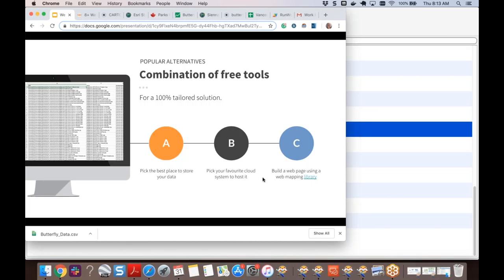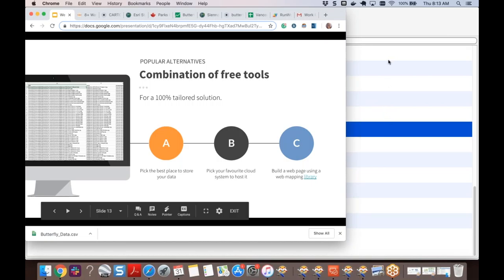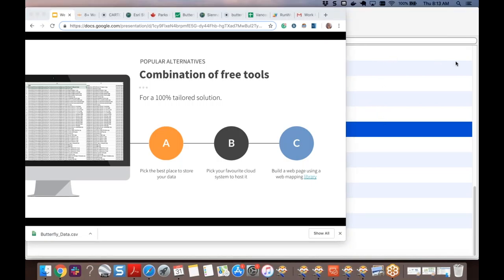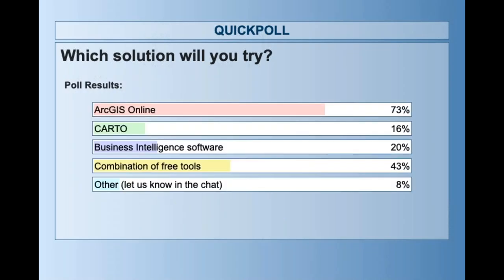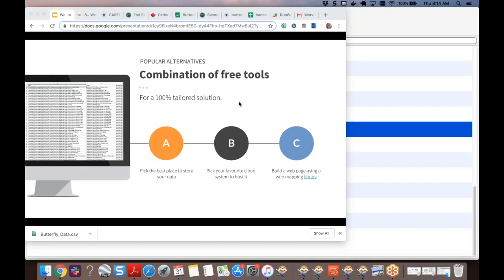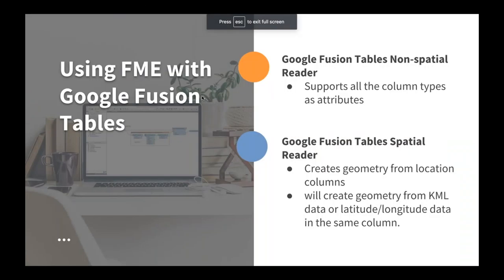Before jumping into more demos, there's a poll asking which solution attendees plan to use — and if they plan to use something else entirely, they're invited to chat. Results show an even spread across options. There's also a note that pug photos appear throughout the slides, which attendees can revisit in the recording.